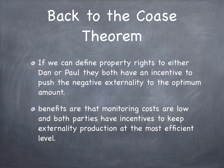If property rights are in favor of Paul, instead of Paul demanding Dan stop producing noise altogether, the two can negotiate. Dan can pay Paul a transaction cost in order to produce an efficient level of noise. Both parties are better off, including everyone else.